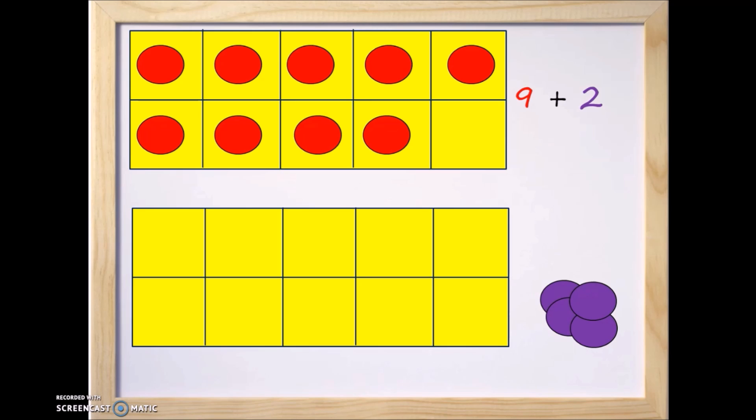Now let's take a look at the purple counters. So let's add the purple counters to the second 10 frame. 1, 2, so that's 2 to represent the number 2. So now what are we going to do? We're going to make 10.